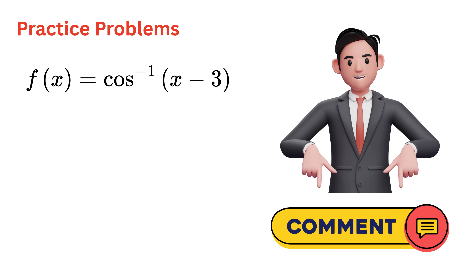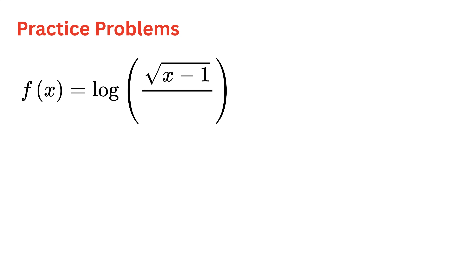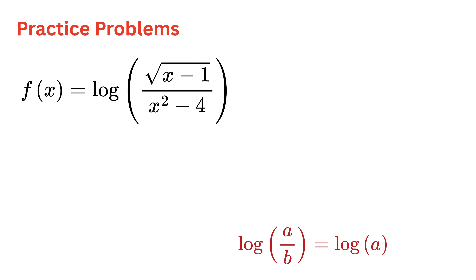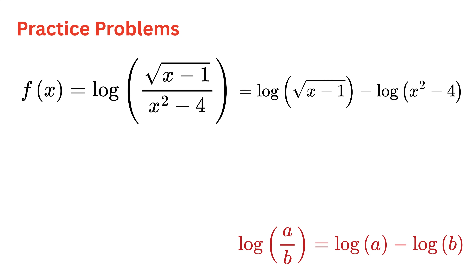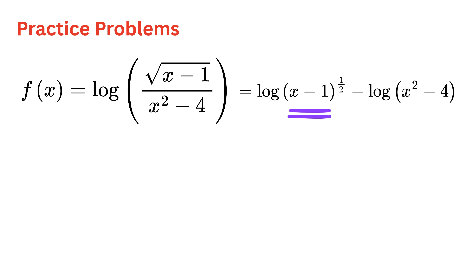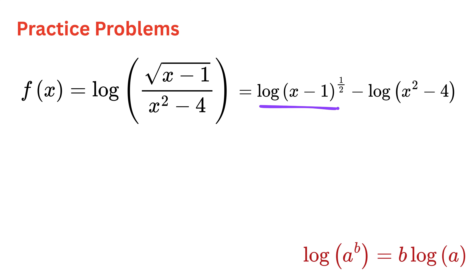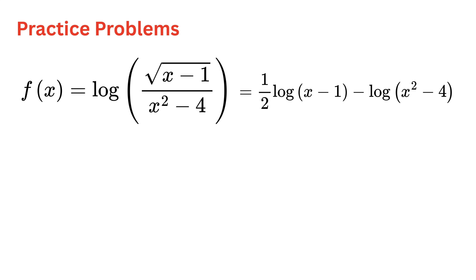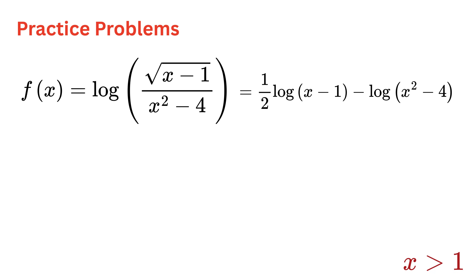Now let's look at f(x) = log(√(x − 1) / (x² − 4)). Using the log quotient rule, log(a/b) = log a − log b, this becomes log(√(x − 1)) − log(x² − 4), which simplifies to ½·log(x − 1) − log(x² − 4). For the first part, x − 1 must be > 0, giving x > 1. Keep that aside.